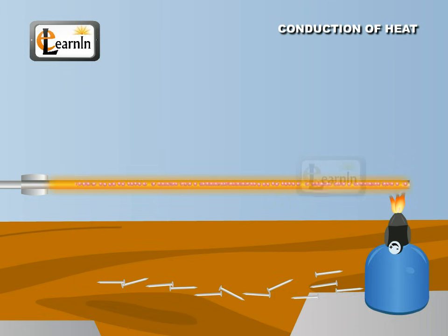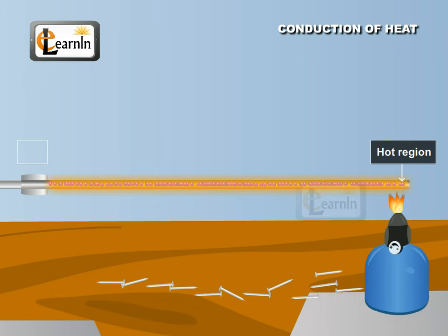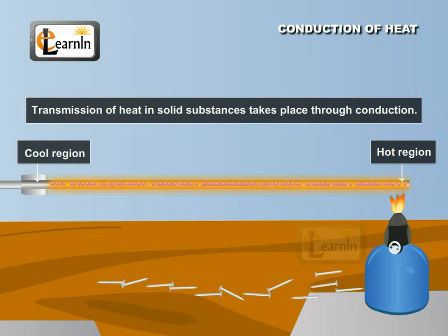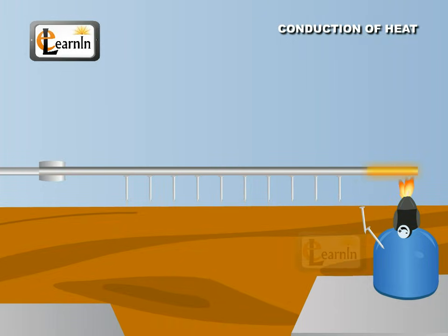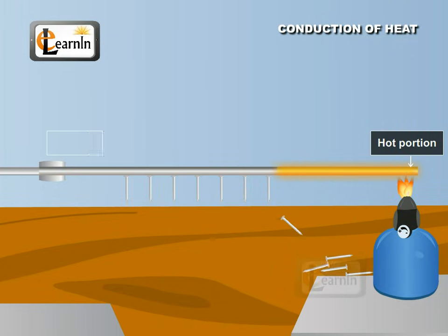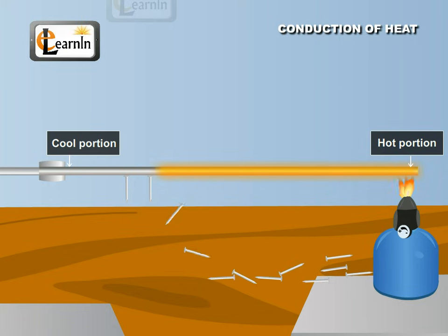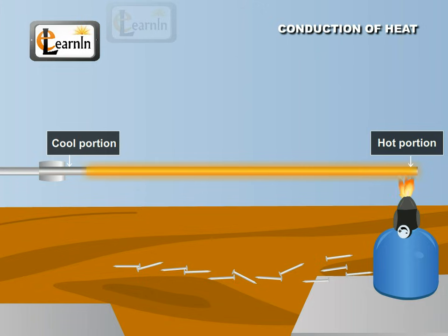In this way, the heat energy gets transferred from the hot region to the cold region. Transmission of heat in solid substances takes place through conduction. For conduction to take place from the hot portion of the body to the cold part, or from the hot body to the cold body, the two parts should be in contact with each other.